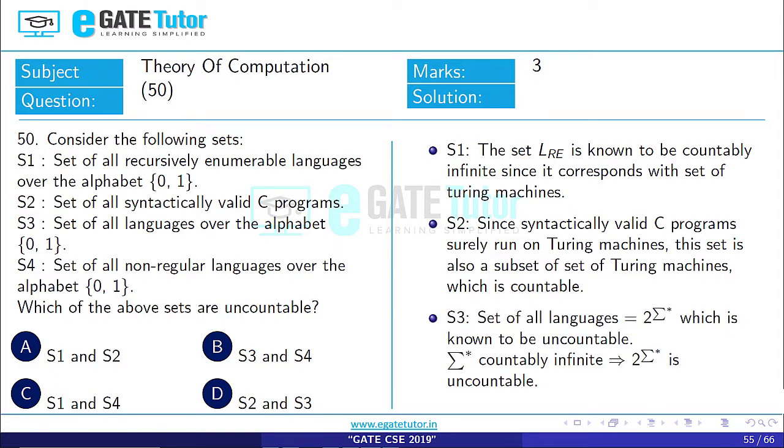Set S3 is the set of languages over the alphabet {0, 1}, that is 2 raised to power Σ*, which is known to be uncountable. Because Σ* is countably infinite, and the power set of countably infinite is uncountable—that is, 2 raised to power infinity is uncountable.